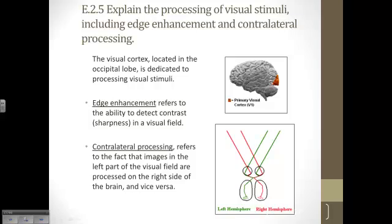Two terms with regard to visual processing that IB wants you to be familiar with are edge enhancement, which refers to the ability to detect contrast or sharpness in a visual field, and contralateral processing, which basically means that when you see something in the left side of the visual field, in this case the picture shows something coming in from the left side indicated by the color red, it's actually processed in the right hemisphere of your brain. And when you see something in the right hemisphere, which in this case is colored green, it turns out to be processed in the left hemisphere of your brain.